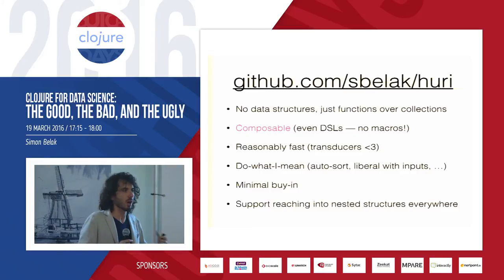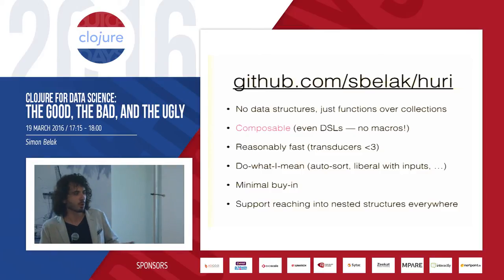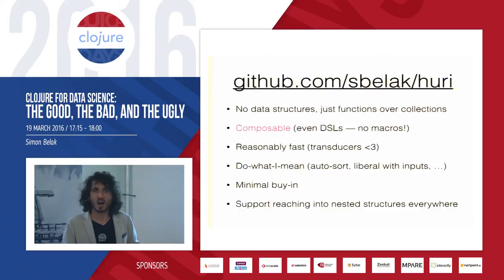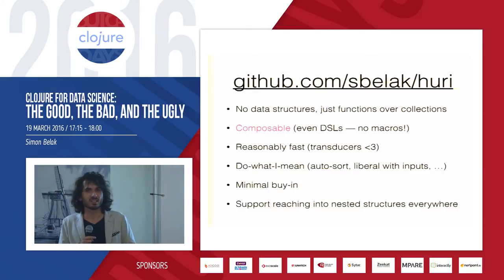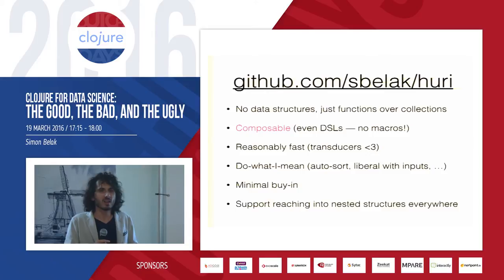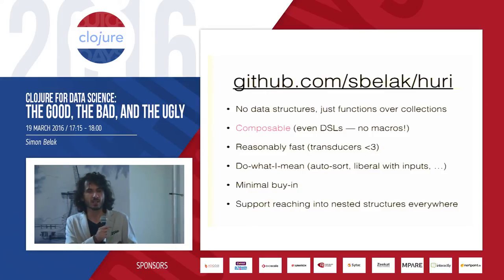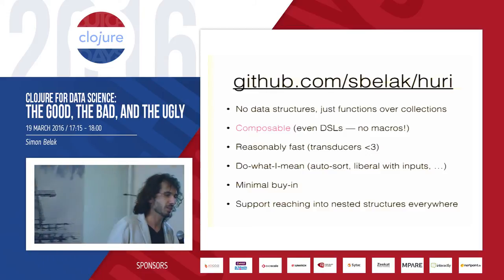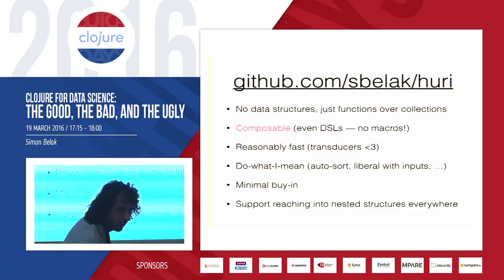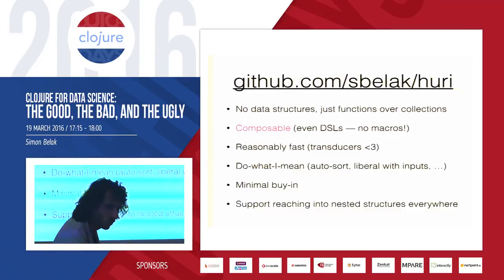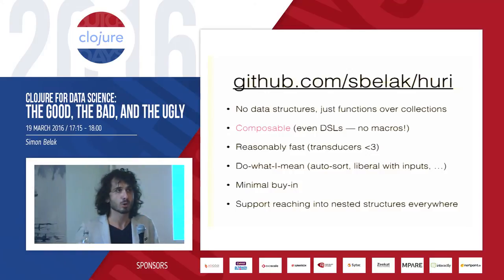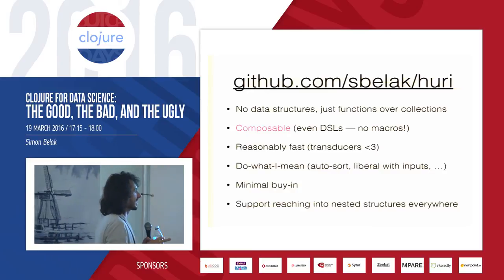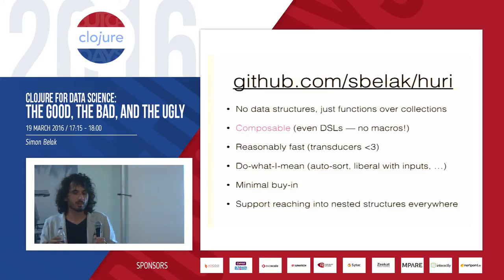I also wanted a library that requires minimal buy-in — you can just use a single function and be done with it, without reworking your whole approach. For instance, component frameworks for Clojure require way too much buy-in. One of the beauties of Clojure is how orthogonal various libraries are, and the moment you have a library that forces you to structure your whole program and your thinking around how it works, I think that's a problem which detracts from the ultimate power of Clojure.